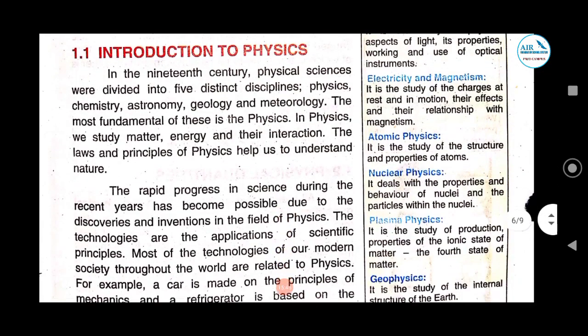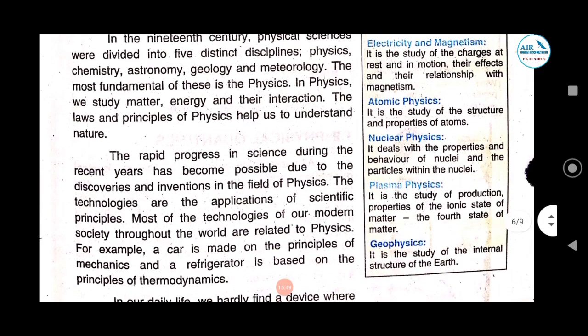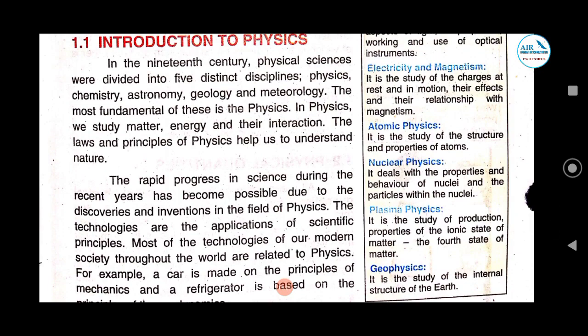Moving on to physics — what is physics? Physics comes from the domain of physical sciences. In the 19th century, physical sciences were divided into five distinct disciplines: physics, chemistry, astronomy, geology, and meteorology. The most fundamental of these is physics — it forms the base of all these disciplines. In physics, we study matter, energy, and their interaction.